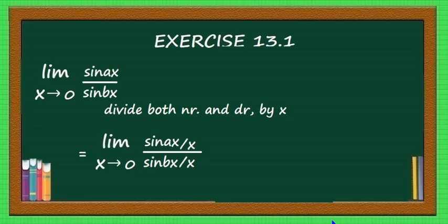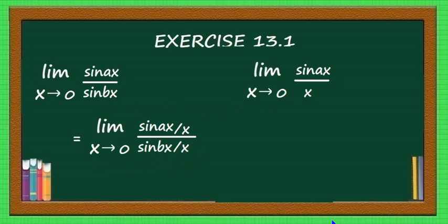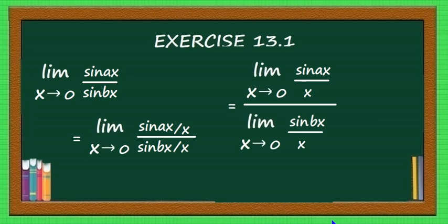The limit of a quotient of two functions is the quotient of the limits of the functions. This becomes limit x tending to 0 of sin(ax)/x divided by limit x tending to 0 of sin(bx)/x. Both are standard limits. Applying the formulae: limit x tending to 0 of sin(ax)/x equals a, and limit x tending to 0 of sin(bx)/x equals b. That is why the answer is a/b.